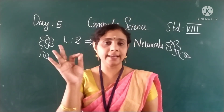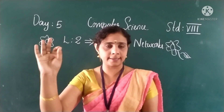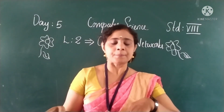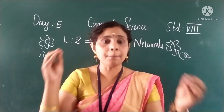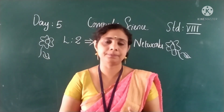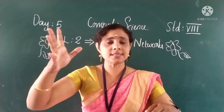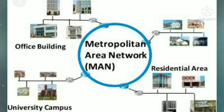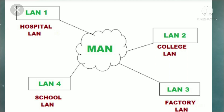Next is metropolitan area network, or MAN. This network is used in cities, a college campus, or a small region. This type of network can cover an area from several miles to tens of miles. A MAN is often used to connect several LANs together to form a bigger network. When this type of network is specially designed for a college campus, it is also known as a campus area network.